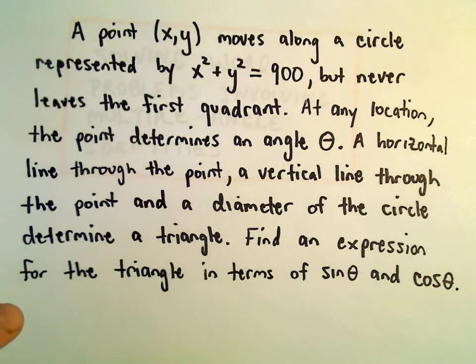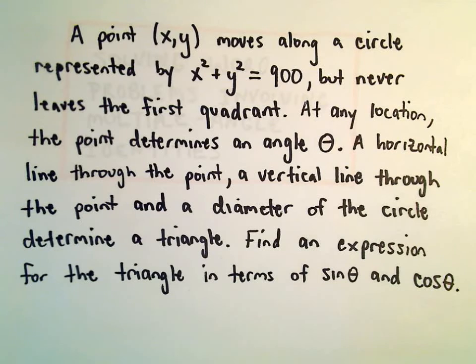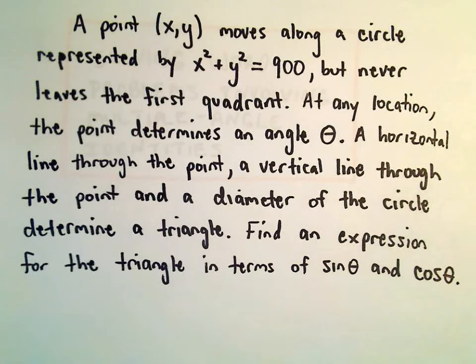So, at any location, the point determines an angle theta, a horizontal line goes through the point, a vertical line goes through the point, and the diameter determines a triangle. We want to find an expression for that triangle in terms of sine theta and cosine theta.